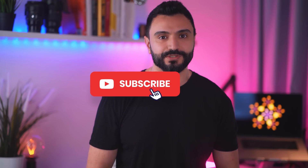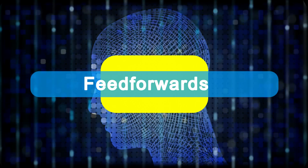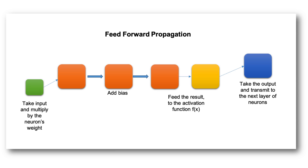When learning about neural networks, you will come across two essential terms describing the movement of information: feed-forward and back propagation. In feed-forward propagation, the flow of information occurs in the forward direction — the input is used to calculate some intermediate function in the hidden layer, which is then used to calculate an output. The activation function acts as a mathematical gate between the input feeding the current neuron and its output going to the next layer.